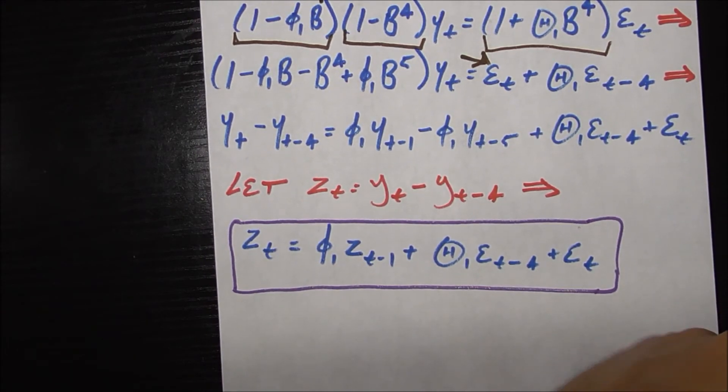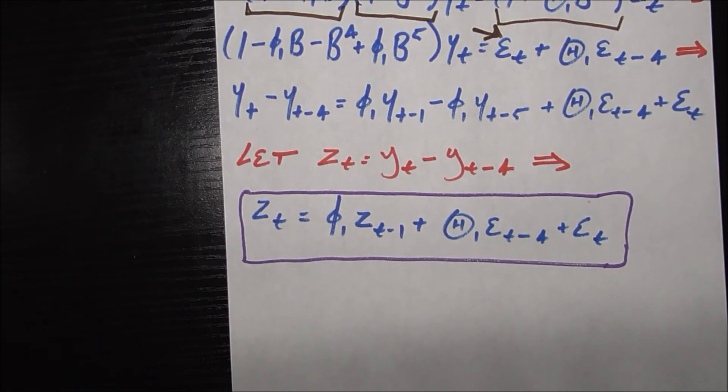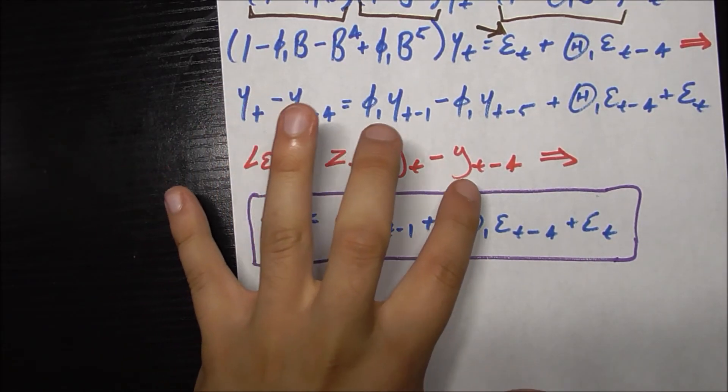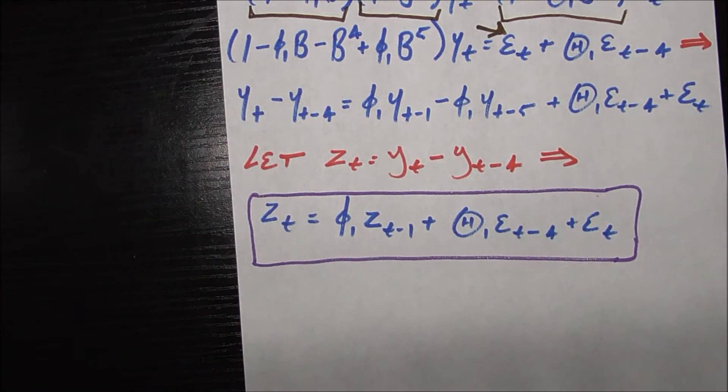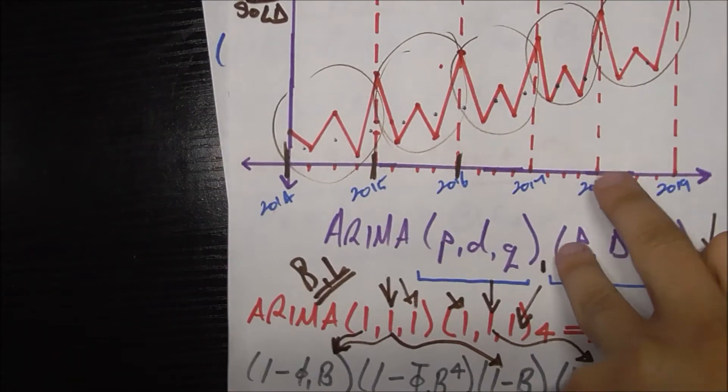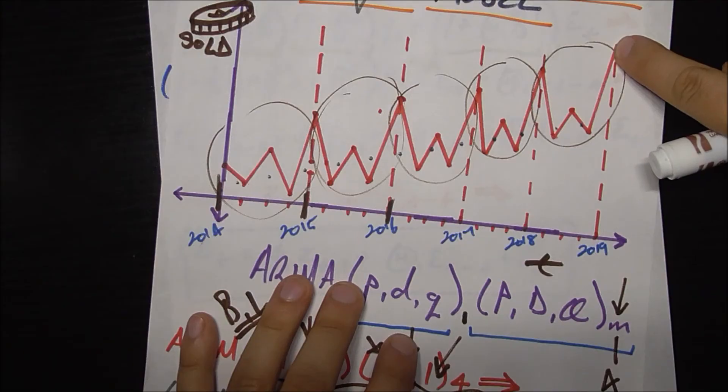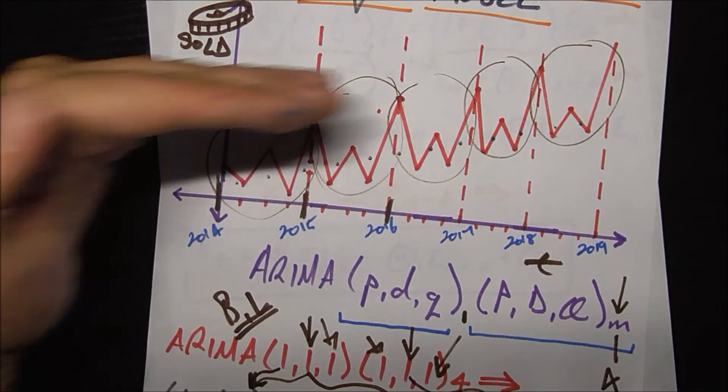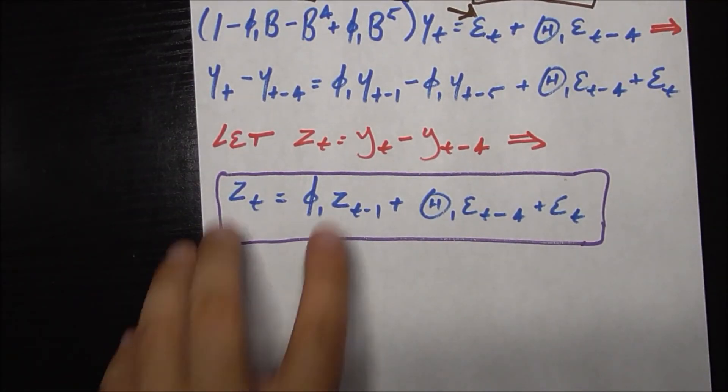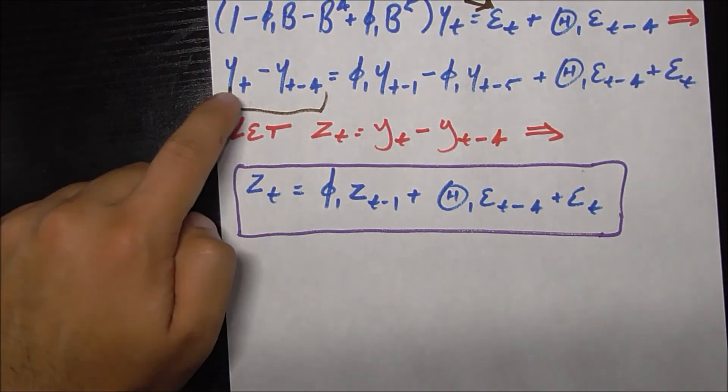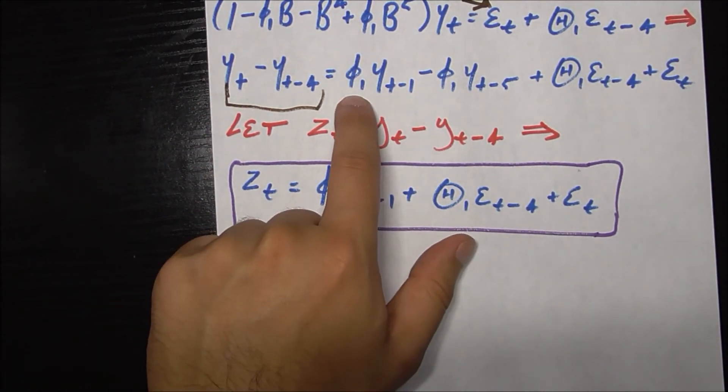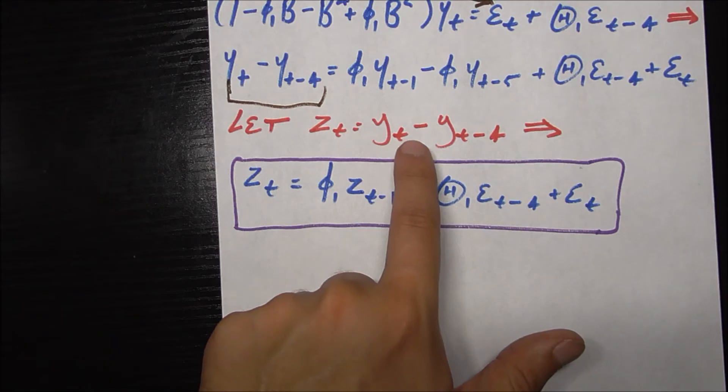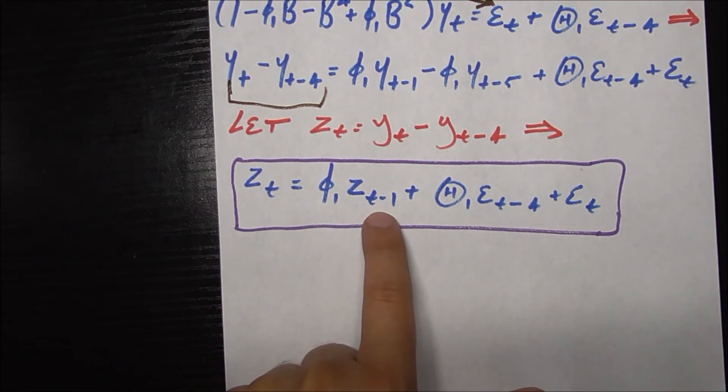Now you're probably thinking I just made a huge mess, but it's about to get real clean if we define a new variable called z sub t, which is defined as Y sub t minus Y sub t minus 4. Going back to the graph for a moment, this is saying I have a new time series which is defined as the original time series at some point minus that time series four periods ago, which makes sense because that's going to help me get this time series from an upward trend to more stationary. I can factor out the phi sub 1 and I'm left with Y sub t minus 1 minus Y sub t minus 5, which again using this identity is just z sub t minus 1.